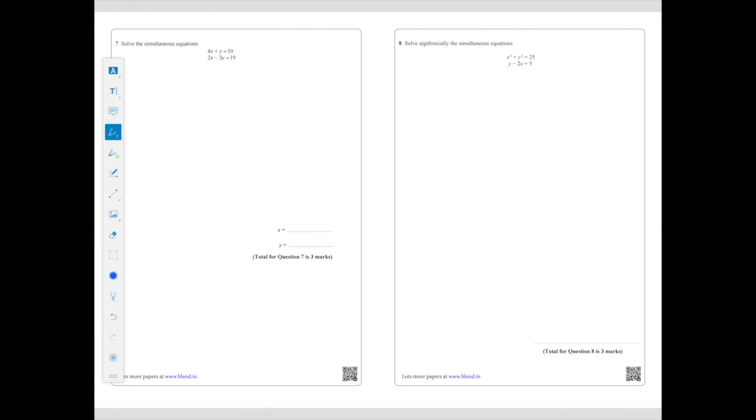Question 8. This is slightly different, so I want to show you how to solve these ones. Now you've got X squared plus Y squared equals 25, and Y minus 2X equals 5. And the issue here is you have squared values.